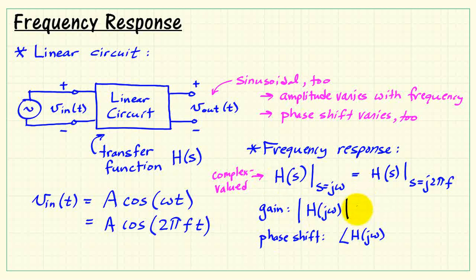So H of S is complex valued, this magnitude becomes a real value, and its phase becomes a real value. So again we really have gain and phase shift are the two specific things embodied in H of S.